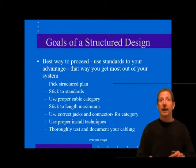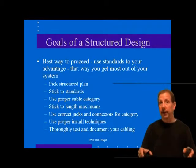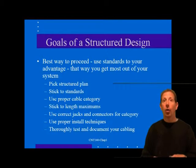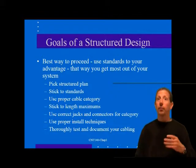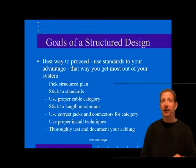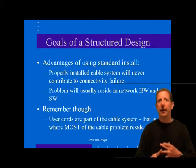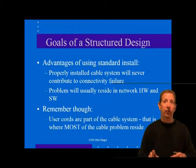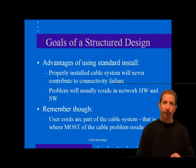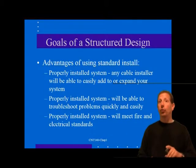It is always possible that someone could damage a cable while doing unrelated work on electrical, plumbing, heating, ventilating, and air conditioning systems. User cables that go from the workstation to the wall jack are considered part of the cabling system and their failure can disable a network connection. A standard installation ensures that any trained cable installer will be able to easily expand, troubleshoot, or repair your cabling system.